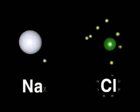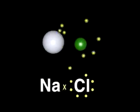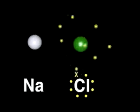If the atoms collide with sufficient energy, the chlorine atom will remove the electron from the sodium.